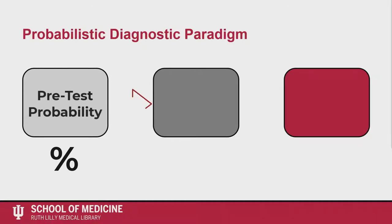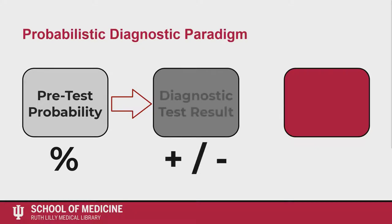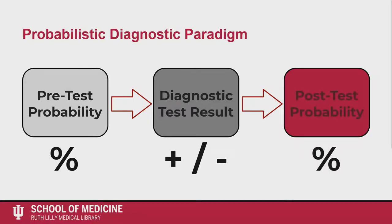Then you run the diagnostic test and it is either positive or negative. The results of that diagnostic test will likely change your views about the likelihood that the patient has the disease. That number becomes the modified disease probability or post-test probability.